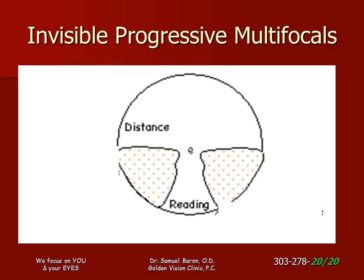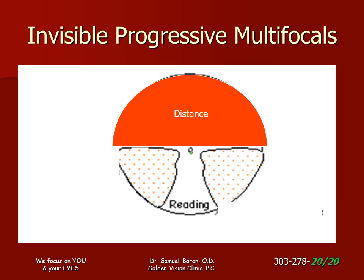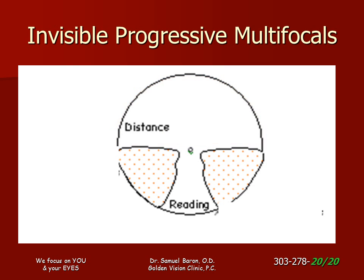Invisible progressive multifocal lenses are ideal for general purpose use. The top of the lens is for distance viewing. As you look down slightly, that is your computer distance prescription. Looking down lower, this is your full reading prescription.